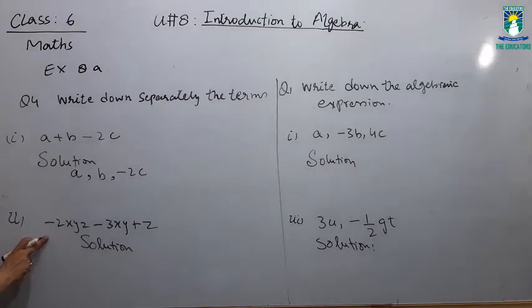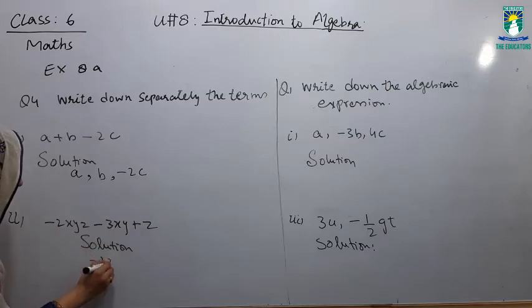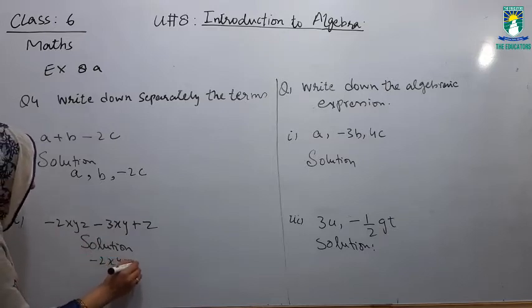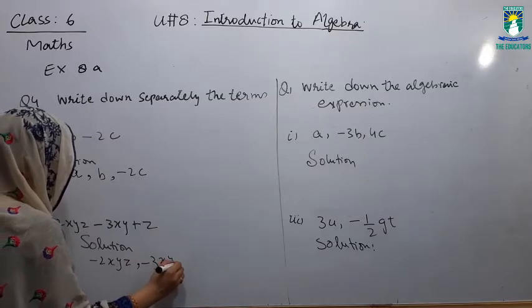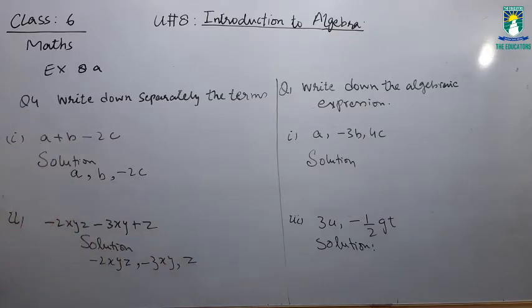If you look at this expression, the second expression is minus 2xyz minus 3xy plus z. The terms of this expression are minus 2xyz, comma minus 3xy, and z. Plus sign mention is required, and you can tell the terms of algebraic expression.